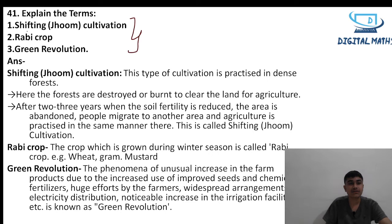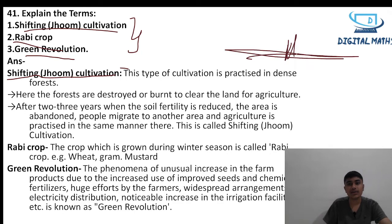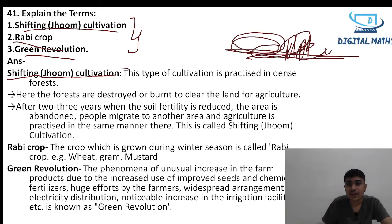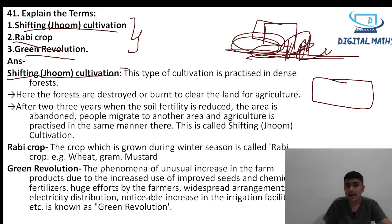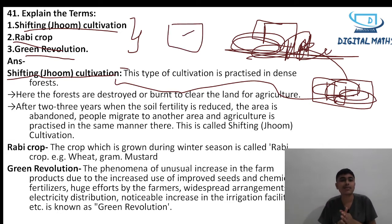Question 41: Explain the terms — shifting or jhum cultivation, rabi crop, and green revolution. Shifting or jhum cultivation is practiced in dense forest areas where forests are burned or destroyed to prepare land for agriculture. After two to three years when the soil fertility is reduced, farmers move to another area and repeat the process.